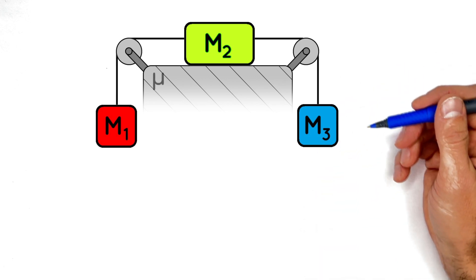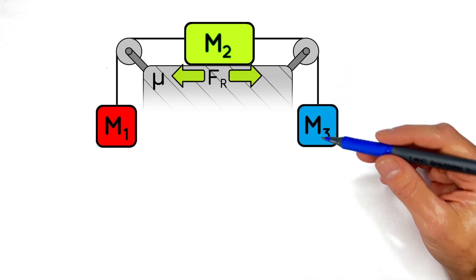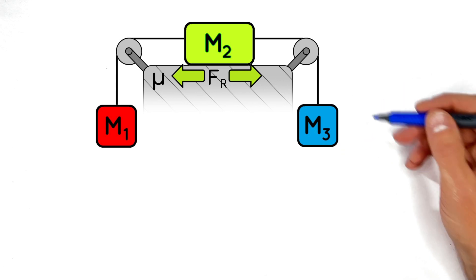Now we're going to say there's some coefficient of friction between this block and the table, since it's typically that friction that gives people trouble when solving a problem like this.